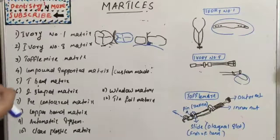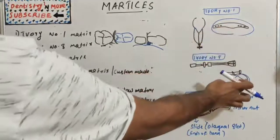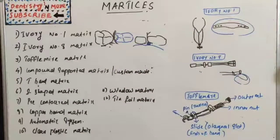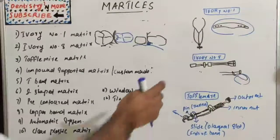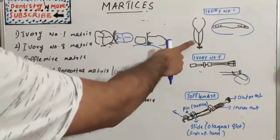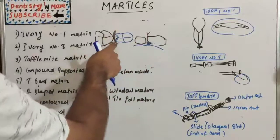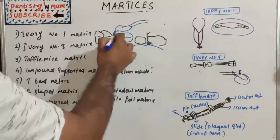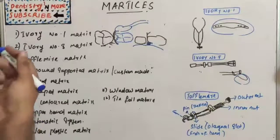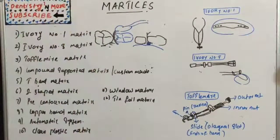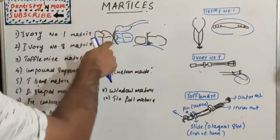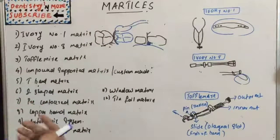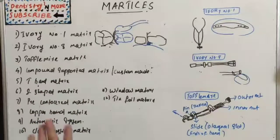A band is a piece of metal or polymeric material used to give support and give form to the restorative material. The function of the retainer is to hold the band in position. Commonly used materials for bands are stainless steel, polyacetate, cellulose acetate, or cellulose nitrate.